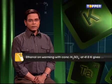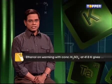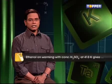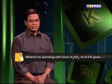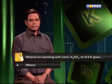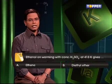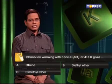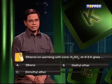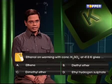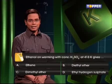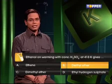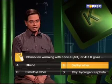Ethanol on warming with concentrated sulfuric acid at 413 Kelvin gives: A. Ethene, B. Diethyl ether, C. Dimethyl ether, D. Ethyl hydrogen sulfate. The correct answer is Option B: Diethyl ether.